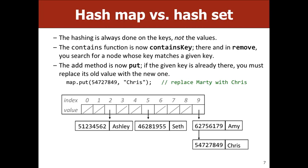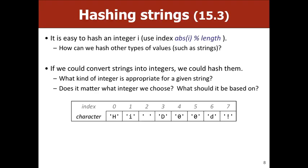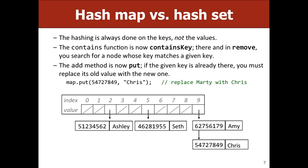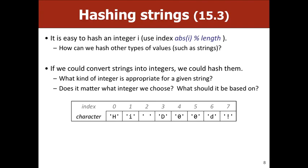This leads to the question of hashing strings. With an integer it was easy — take the absolute value and mod by the table length. But with a string there's no direct number equivalent, and hashing really requires a number so you know which index to look at. Can you just arbitrarily choose a number, like always return 42? Let's talk about what makes a good hash function, and then think of some good hash functions for strings.